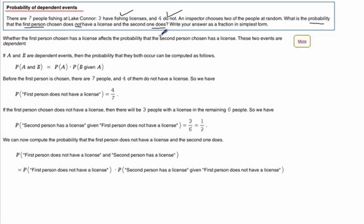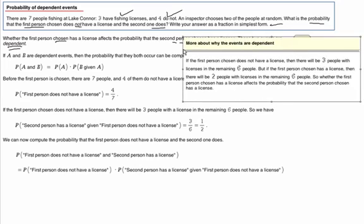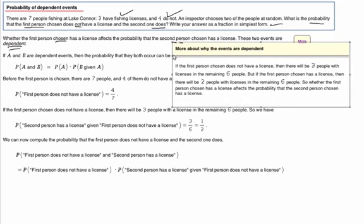Okay, our answer is going to be a fraction. Now, whether the first person chosen has a license affects the probability that the second person chosen has a license. These are dependent. Let's take a little closer look at that before we move on. What does that mean?